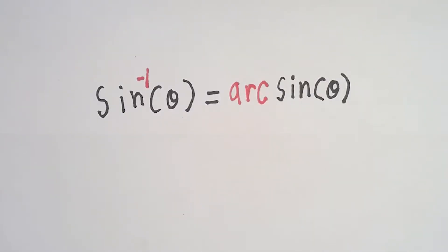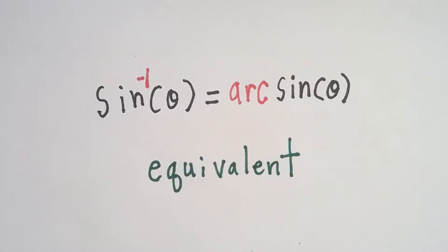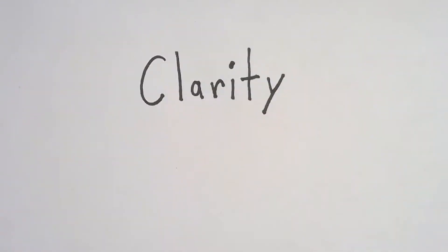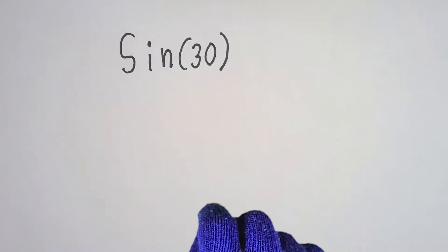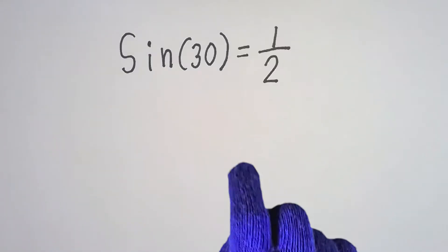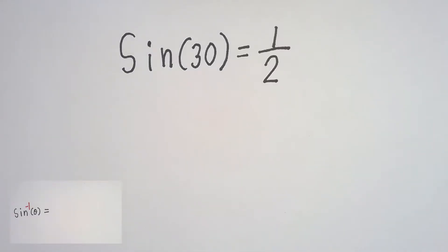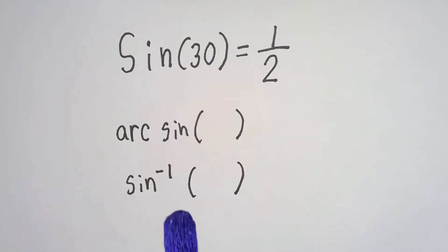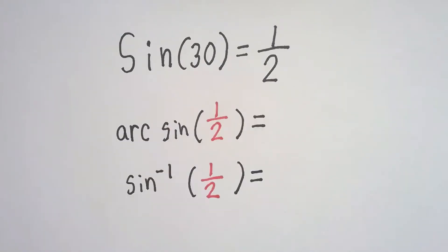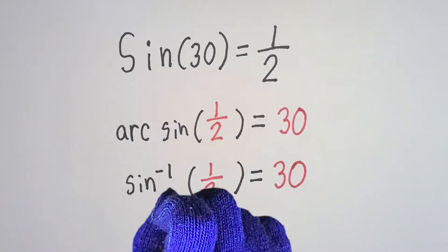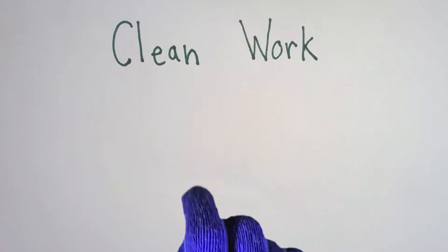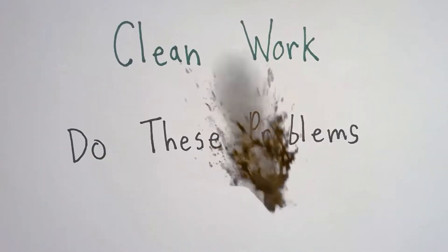That means they're equivalent. We work with clarity, no ambivalence. Sine of 30 is equal to one half. Sine to the negative one reverses the whole math. The arc sine, or the inverse of a half, equals 30. Clean with the work, but we do these problems dirty.